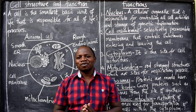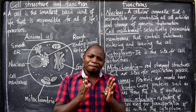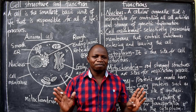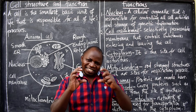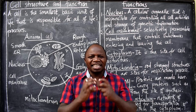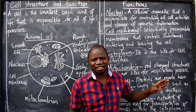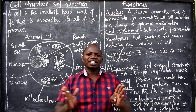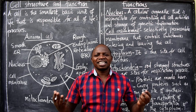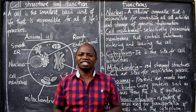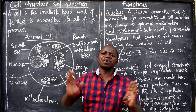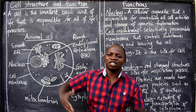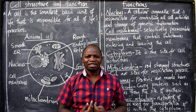Let's begin by defining what a cell is. A cell is the smallest basic unit of life that is responsible for all life processes. In this definition there are certain terms you need to understand. We are saying this is the smallest basic unit of life — you and I cannot be called living organisms if we do not have cells or if we have dead cells. We are called living organisms because of the living cells that we have.